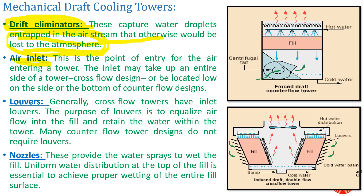Next is your air inlet. The air inlet depends on the type of cooling tower. In a cross-flow cooling tower, air enters from the louver sides, while in a counterflow force-draft tower, air enters from the bottom. The point of entry of air into a tower — the inlet may take up an entire side in cross-flow designs or be located low on the side or bottom in counterflow designs.